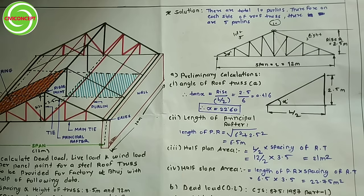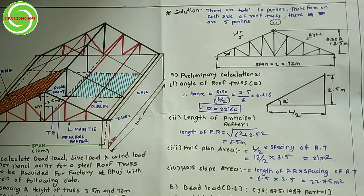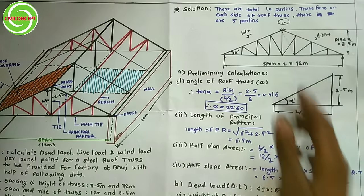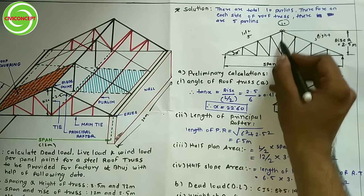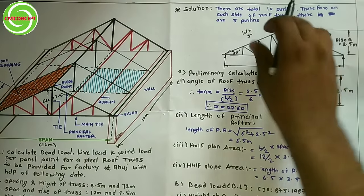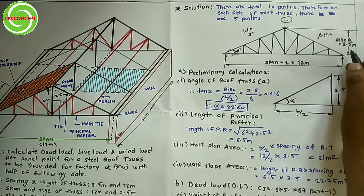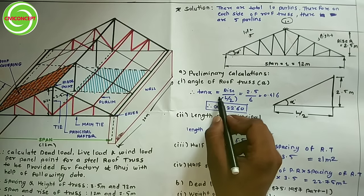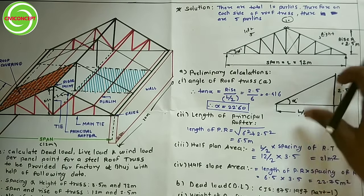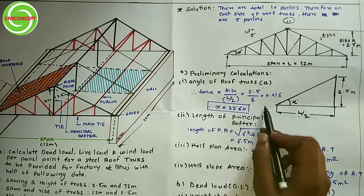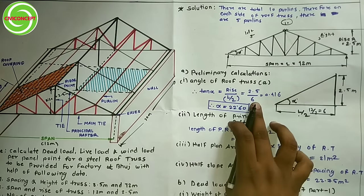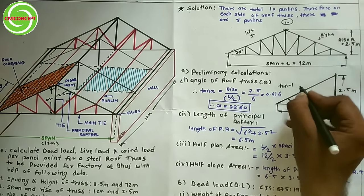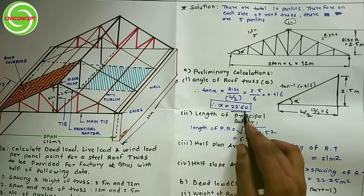Now let's move on to the preliminary calculations. First, we calculate the angle of the roof truss. Using the formula: tan(α) = rise / (half span) = 2.5 / 6 = 0.416. Taking the inverse tangent: α = tan⁻¹(0.416) = 22.60 degrees.